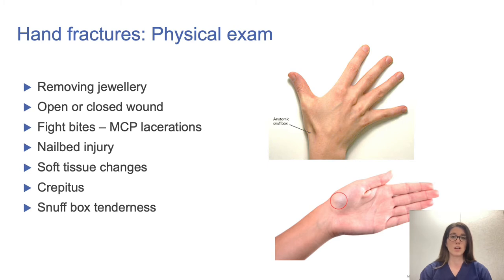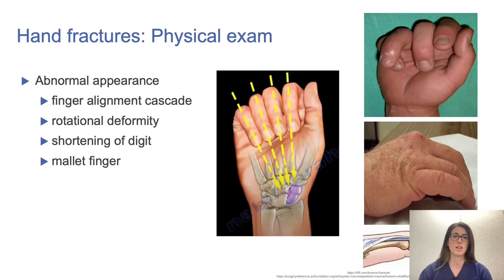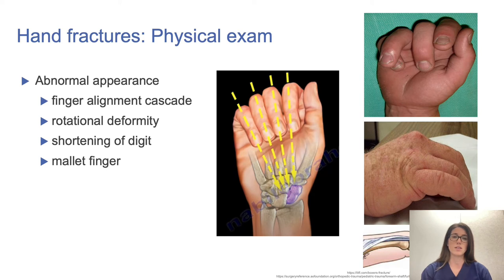You can use Doppler to assess digital artery damage, or perform an Allen's test to evaluate the arterial supply of the hand. Abnormal appearances to consider include the finger alignment cascade: when a patient makes a closed fist, all fingers should point toward the scaphoid. If they don't—as shown in the photo—there may be a rotational deformity indicating an underlying fracture. Shortening of the digit is another sign, and a mallet finger demonstrates a dorsal avulsion fracture.